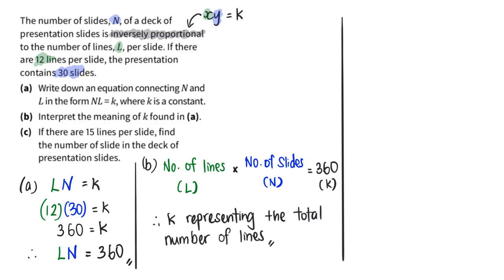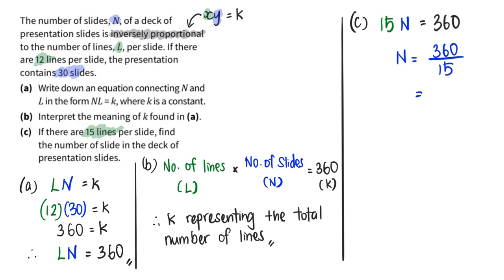Let's move on to part c. If there are 15 lines per slide, what is the number of slides? I substitute 15 into the equation: 15 times the number of slides equals 360. Therefore the number of slides equals 360 divided by 15, which gives 24. We have come to the end of this question.